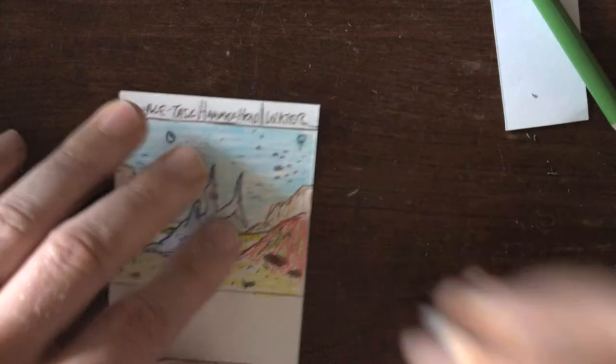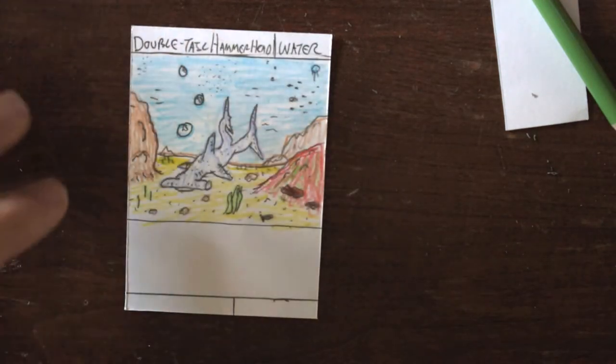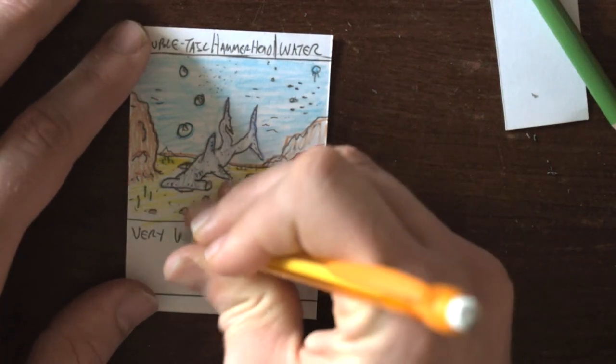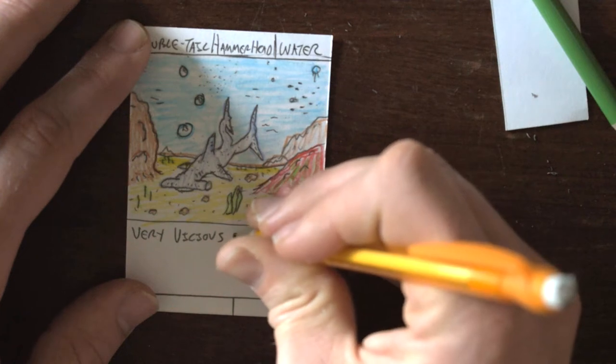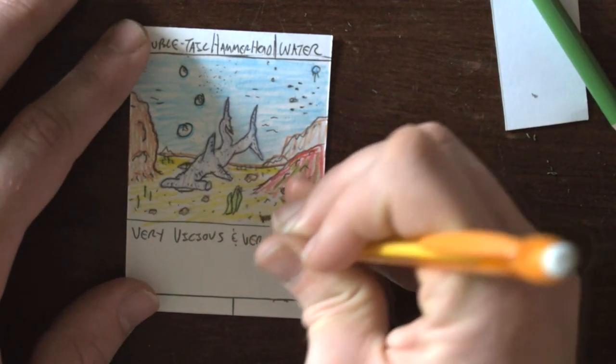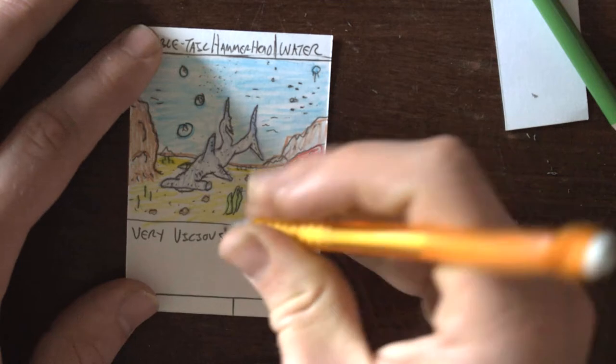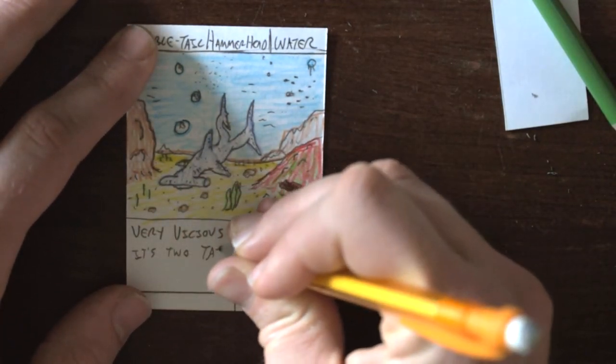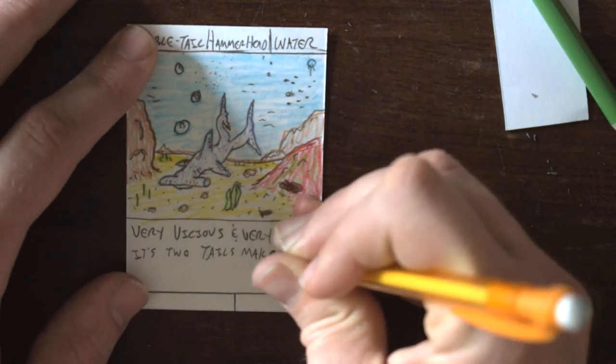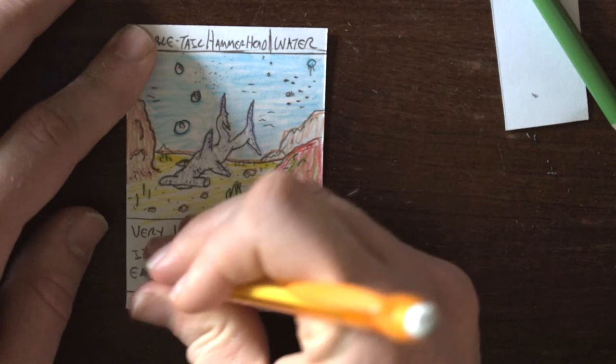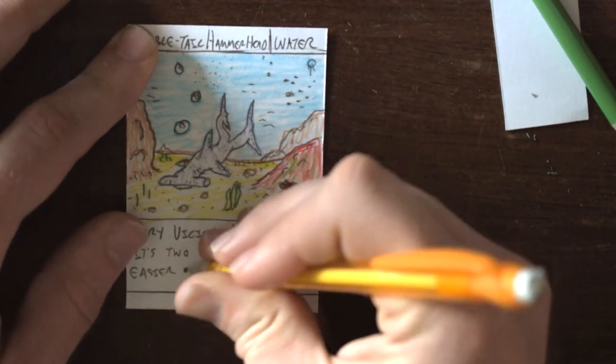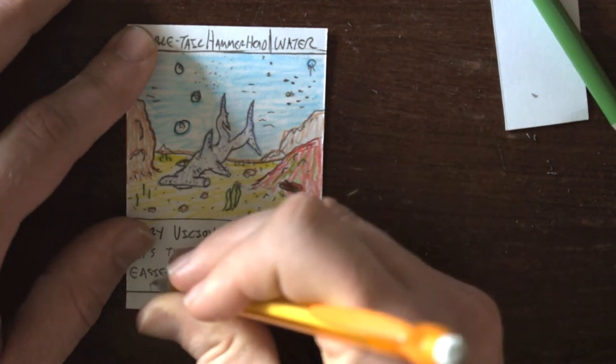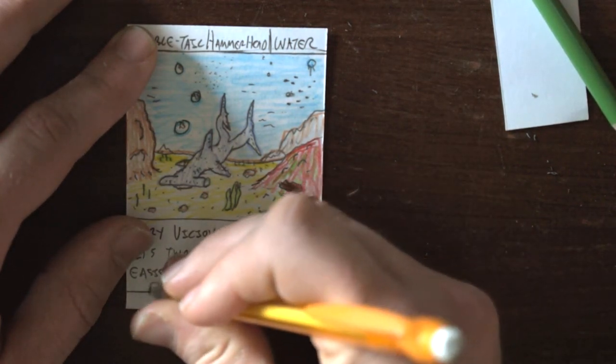And he is water. Now, description. Very vicious and very fast. Its two tails make it easier for it to catch prey. Alright.